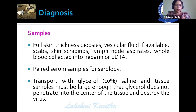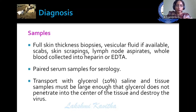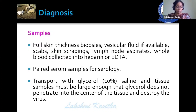For diagnosis, samples to collect include full skin thickness biopsies, vesicular fluid if possible, skin scrapings, lymph node aspirates, whole blood in heparin or EDTA, and paired serum samples for serology. When transporting skin biopsies for virus isolation, use 10% glycerol saline. If the laboratory is nearby, simply transport the sample in a sterile container on ice. A large piece of skin tissue is taken so that glycerol does not penetrate to the middle and damage the virus.